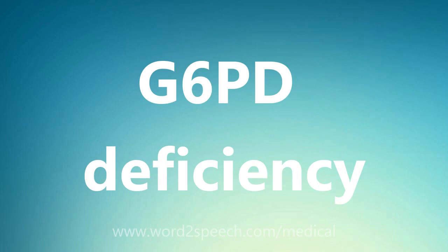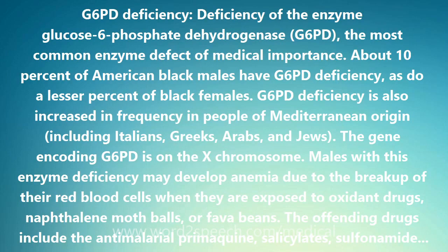G6PD deficiency — deficiency of the enzyme glucose-6-phosphate dehydrogenase (G6PD) — is the most common enzyme defect of medical importance.